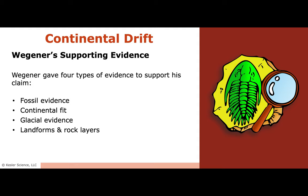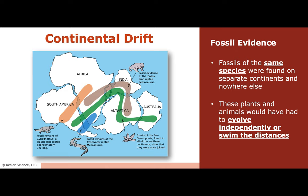Here's the evidence Wegener used to support his theory — he gave four types. He had fossil evidence, he showed that the continents could fit together, he had glacial evidence, and he had landforms and rock layers. For fossil evidence, he found fossils of the same species on separate continents and nowhere else in the world. Those plants and animals would have to either evolve independently — which isn't happening if they're that similar — or swim the distances. An animal is not going to swim from South America all the way to Africa as it is today.